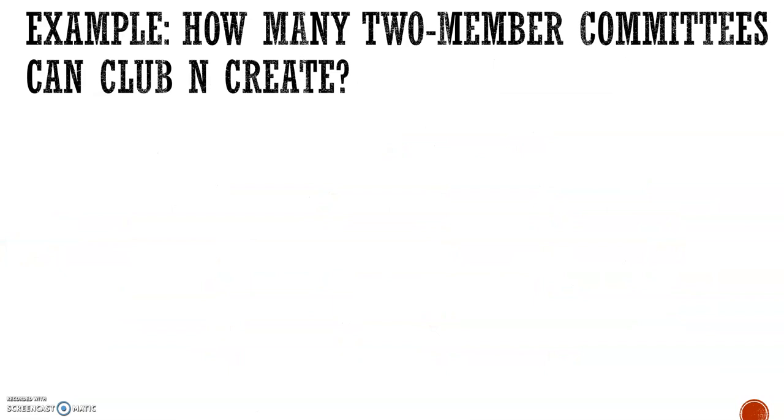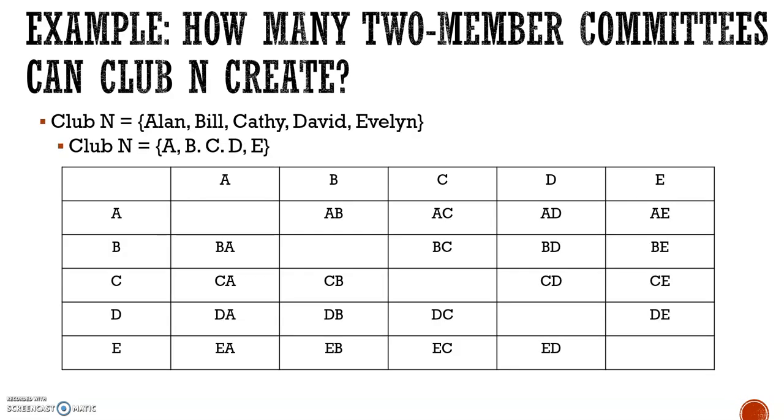How many two-member committees can Club N create? We're using the same chart that we just created. We're talking about two-member committees here, not president and secretary. So in this case, Bill and Alan and Alan and Bill is the same committee, so we're not going to count that. We are not counting the top half. If we count our options in the bottom half, that gives us our number of two-member committees that are possible, and there are 10 two-member committees.